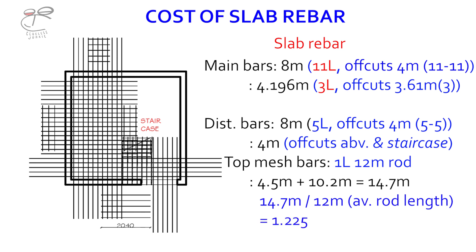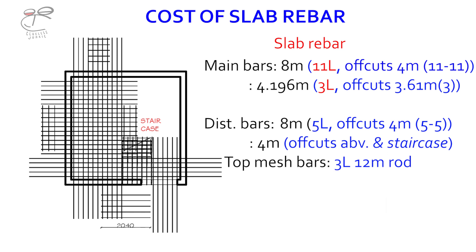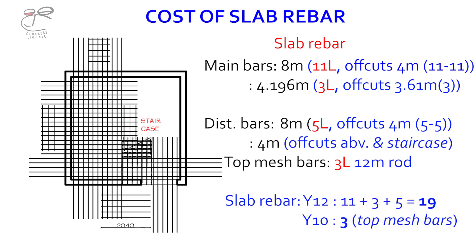Dividing 14.7 meters by an average rod length gives 1.225 units, so that's roughly 3 lengths of 12-meter rod to complete the top mesh. This area was introduced to provide a starter for the next flight of stairs leading to the other floor. For the slab rebar, the Y12 iron needed is 11 plus 3 plus those values — add those up and specify on the main list. We'll be needing 19 lengths of Y12 and then 3 lengths for the Y8. Specify the off-cuts available on ground so we can reference that for other parts of reinforcement needed.